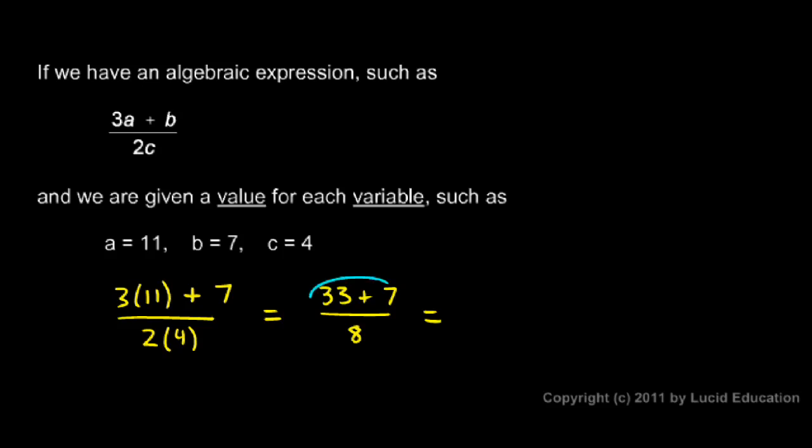Well let's simplify this numerator one more time. 33 plus 7 is 40. So I have 40 divided by 8. And you can see that 40 divided by 8 is 5. In this case it worked out to a nice round number. It doesn't always. But that's our answer in this case. This expression has this value if these are the values of the variables. And by putting those values in and doing the math, we have evaluated that expression.